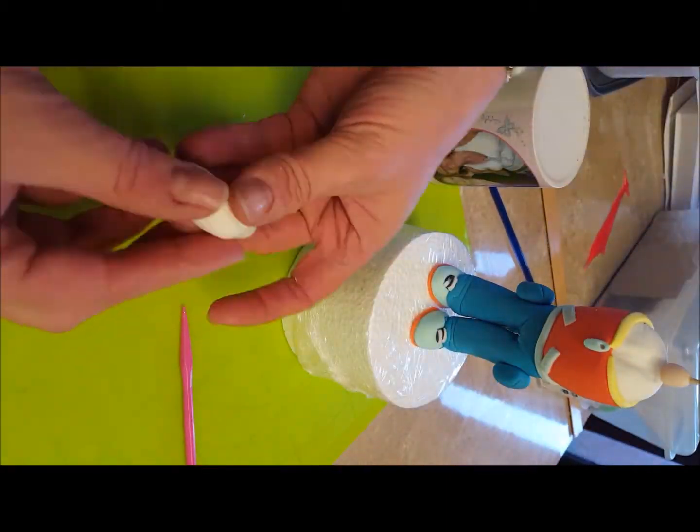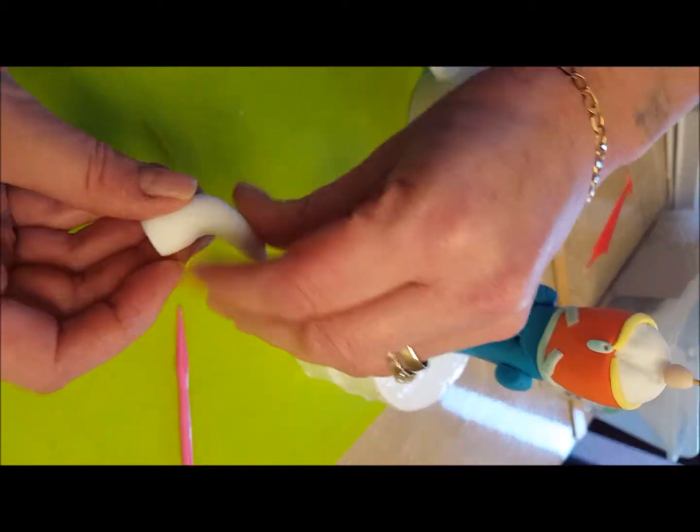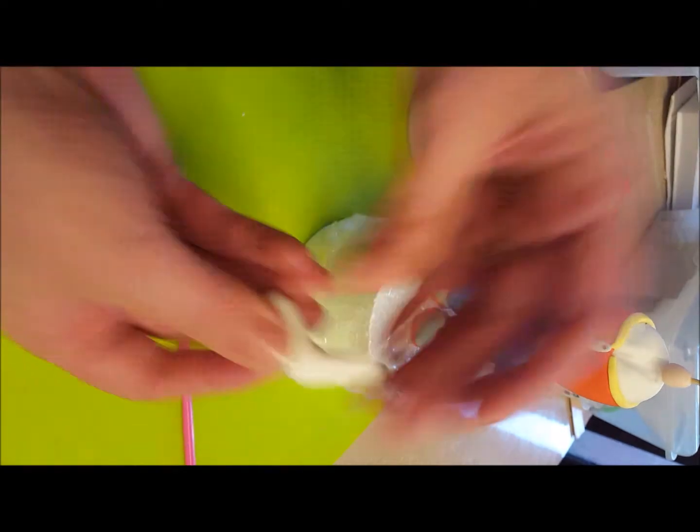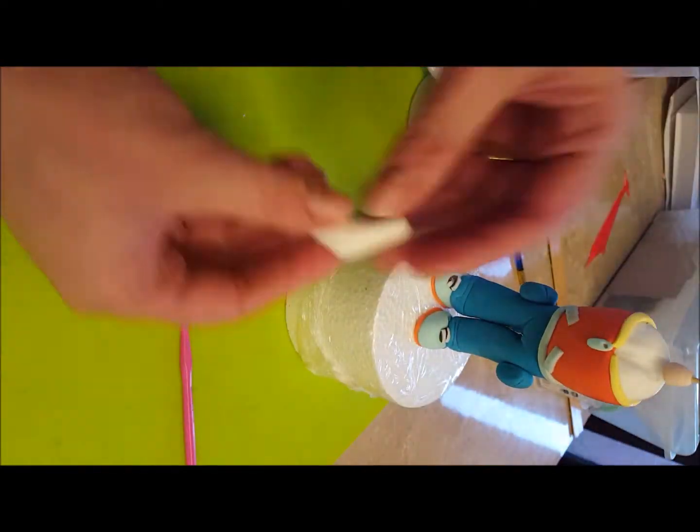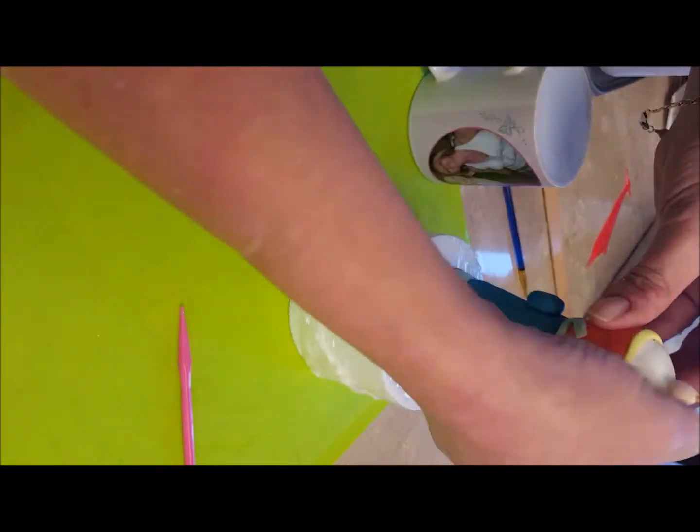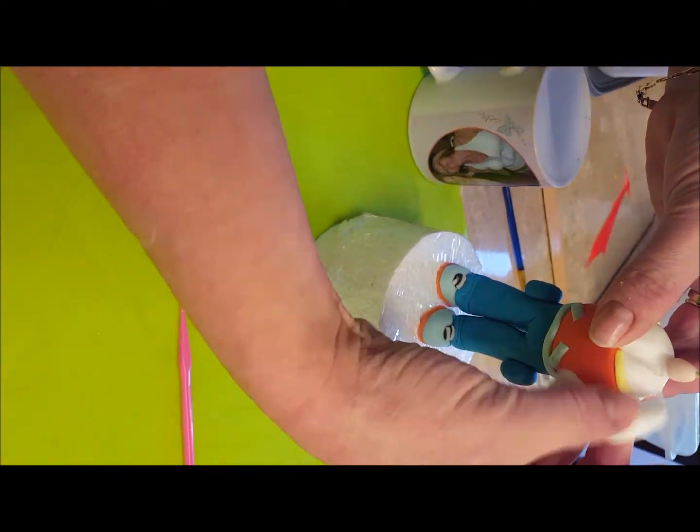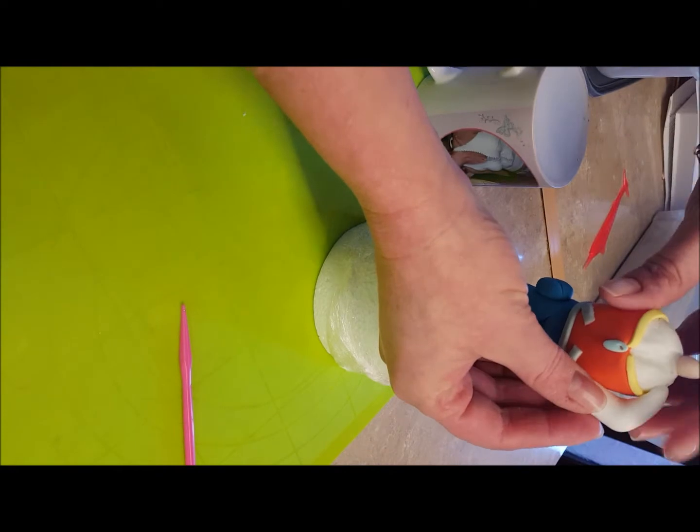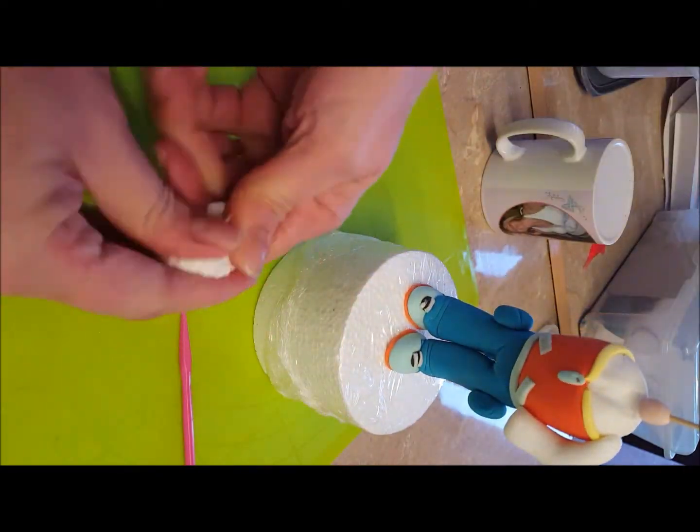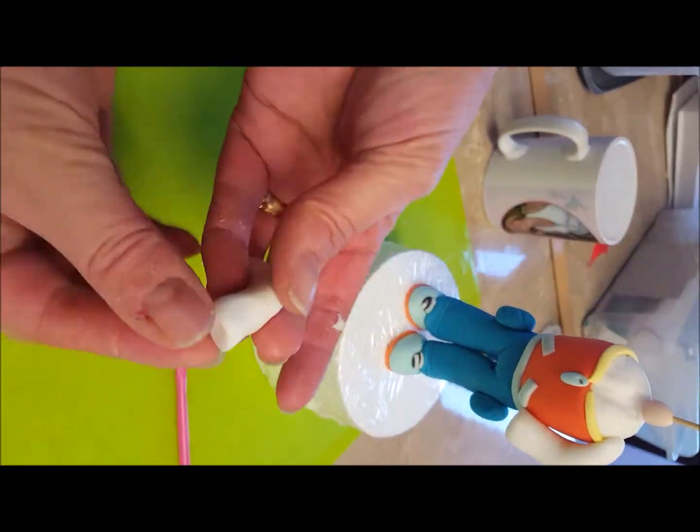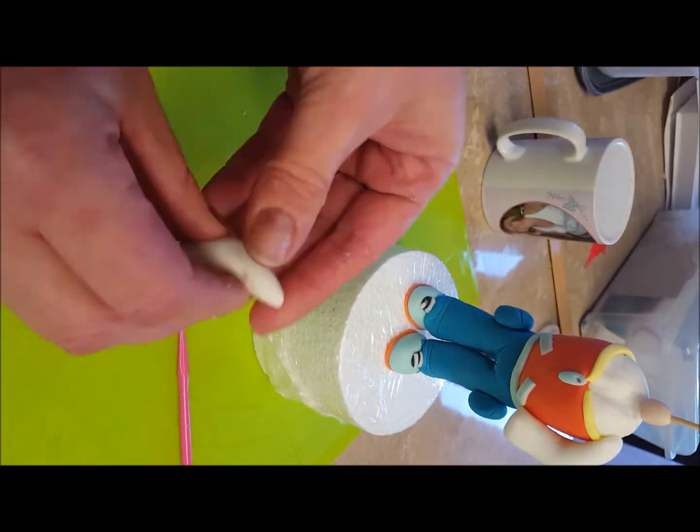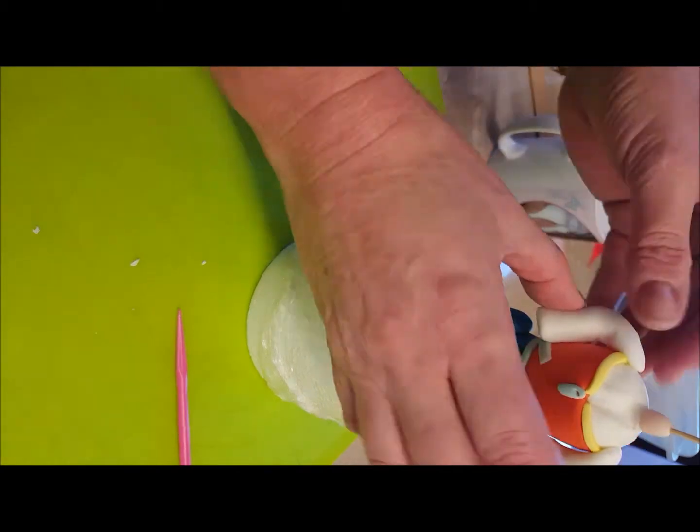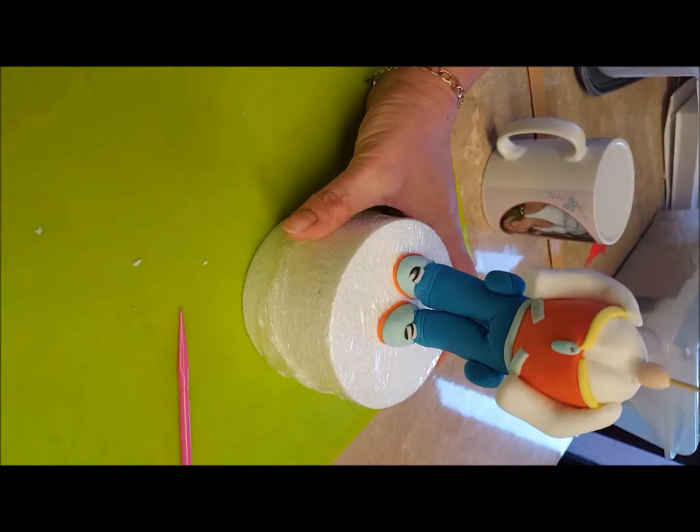Next is the arms. You want 8 grams for each arm. Just bend it to shape. I stuck it a bit higher and then I realized and took it off and put it a bit lower down. And just stick those on.